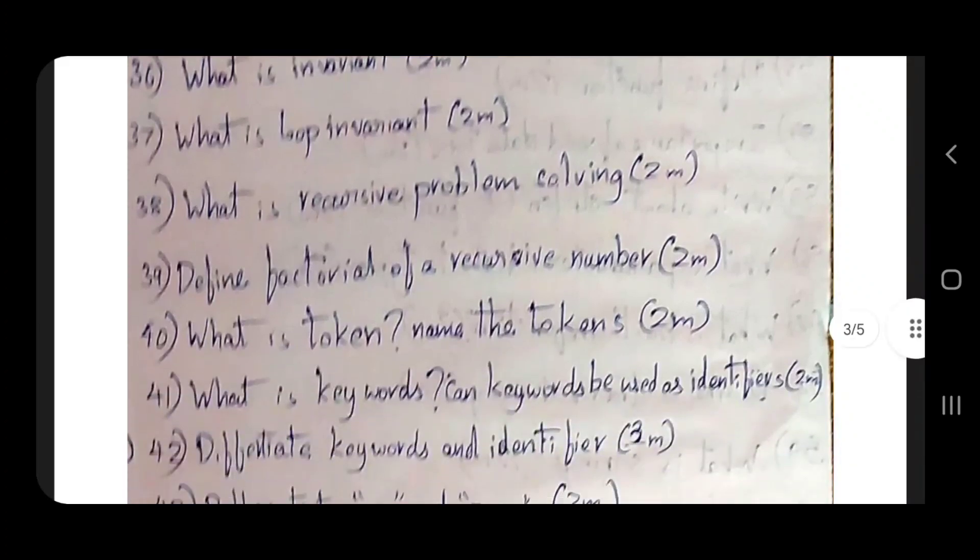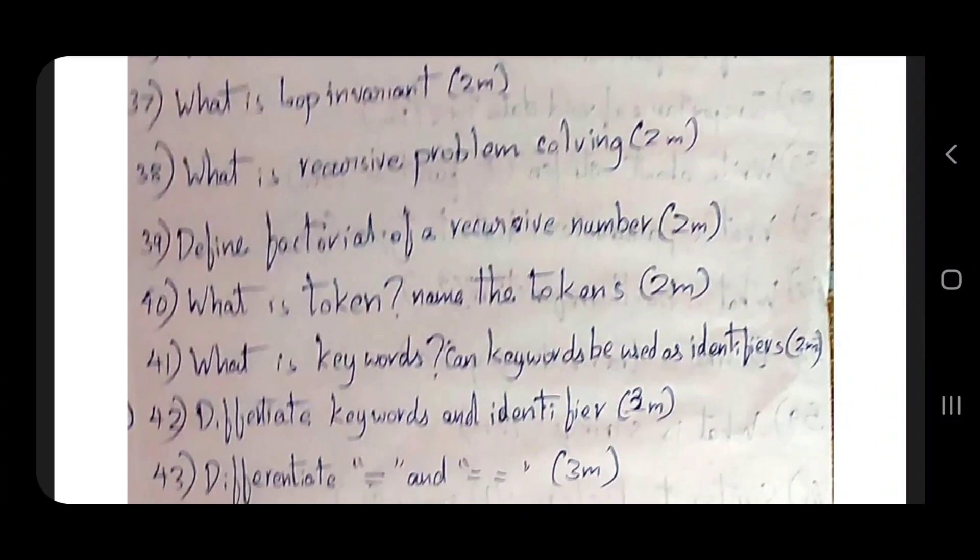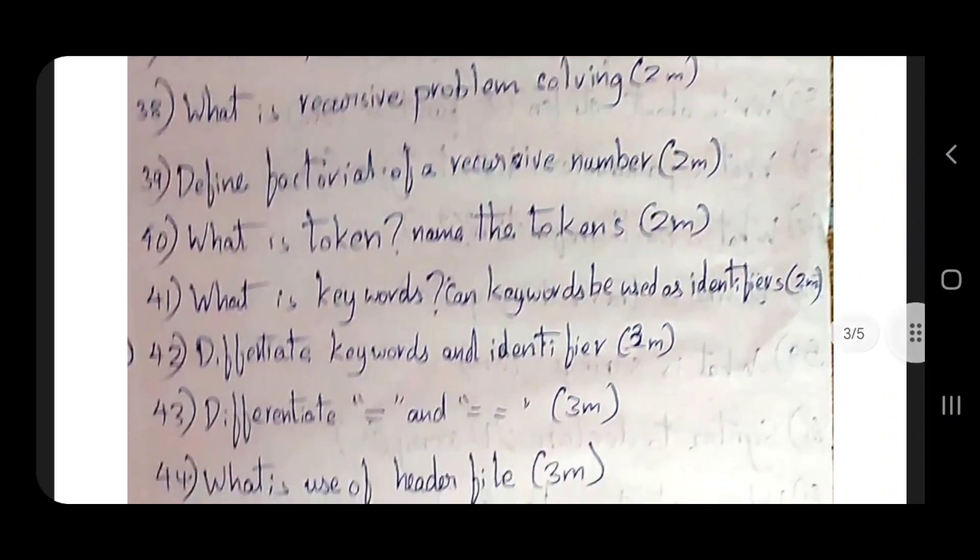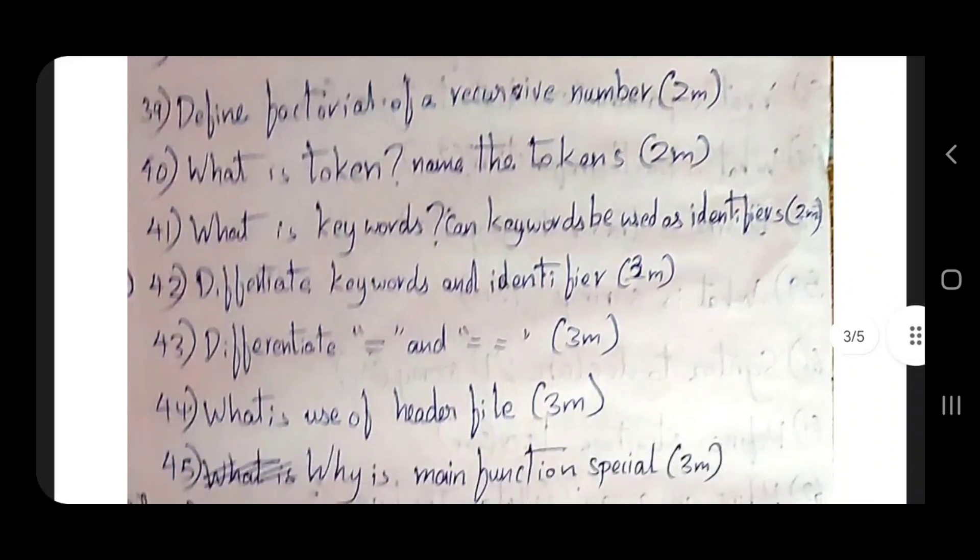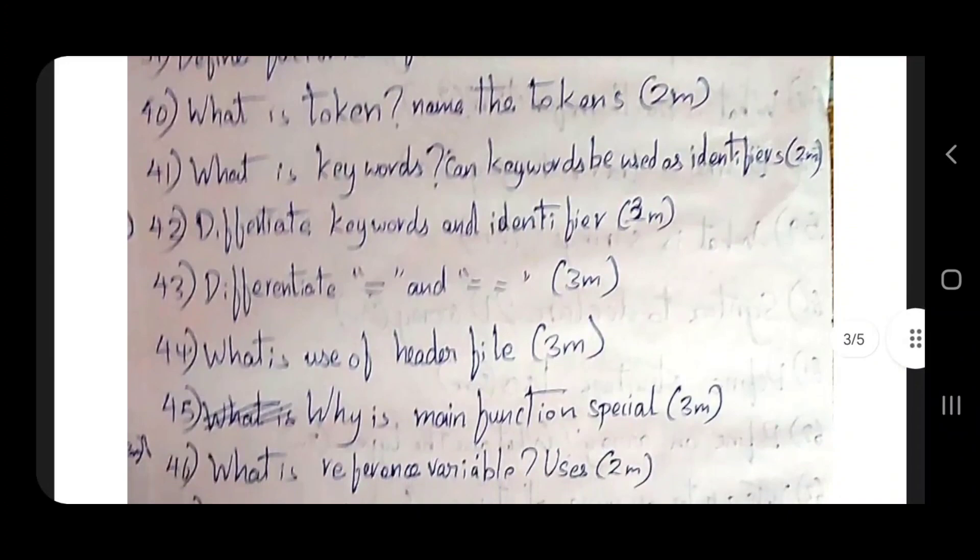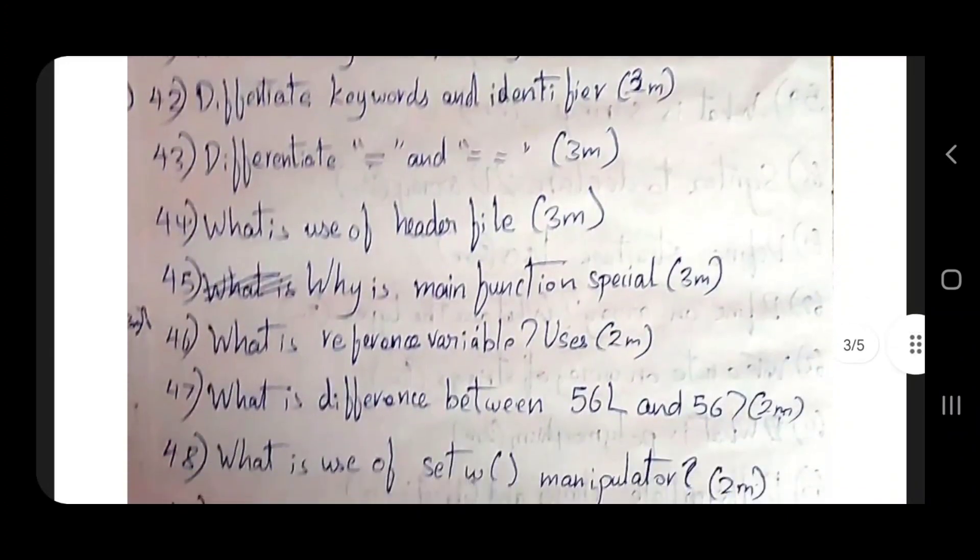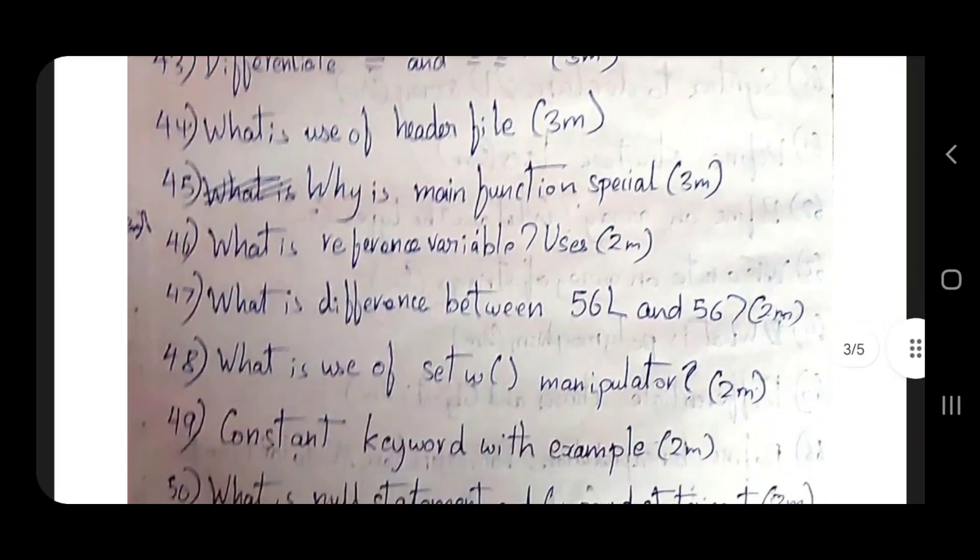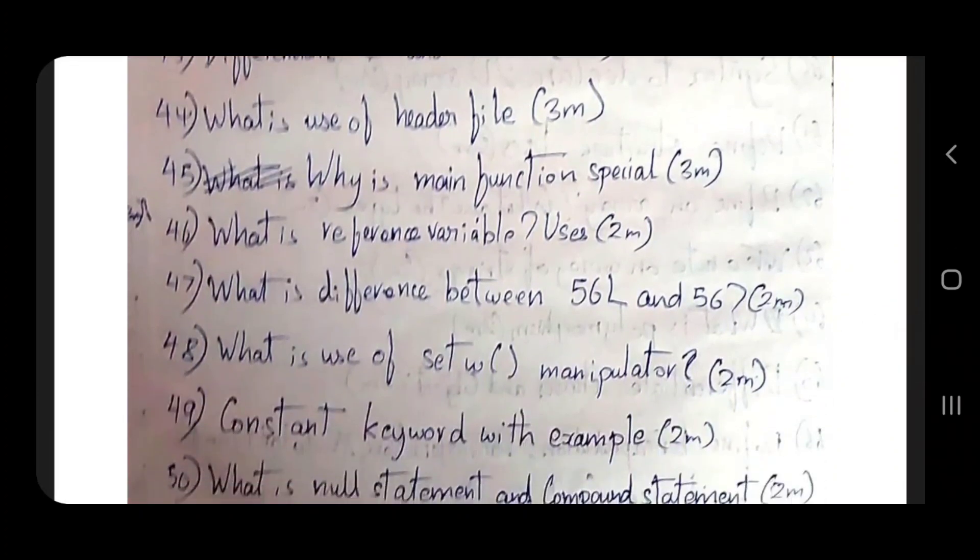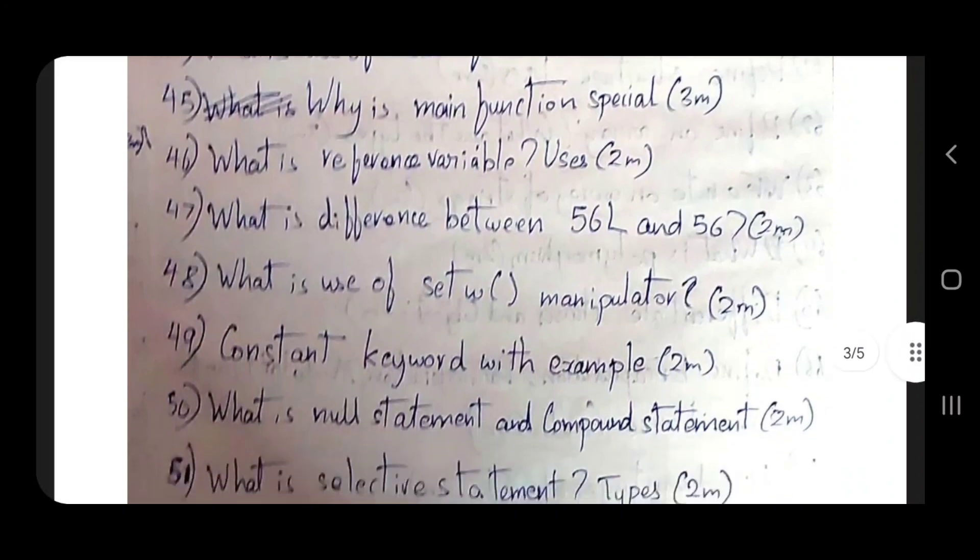Define factorial of recursive number. What is token? Name the tokens. What is keywords, keyword identifier? Differentiate double equal and double equal to, 3 mark. What is use of header file? Why is main function special, 2 to 3 mark? What is reference variable and other uses? What is difference between 56L and 56?